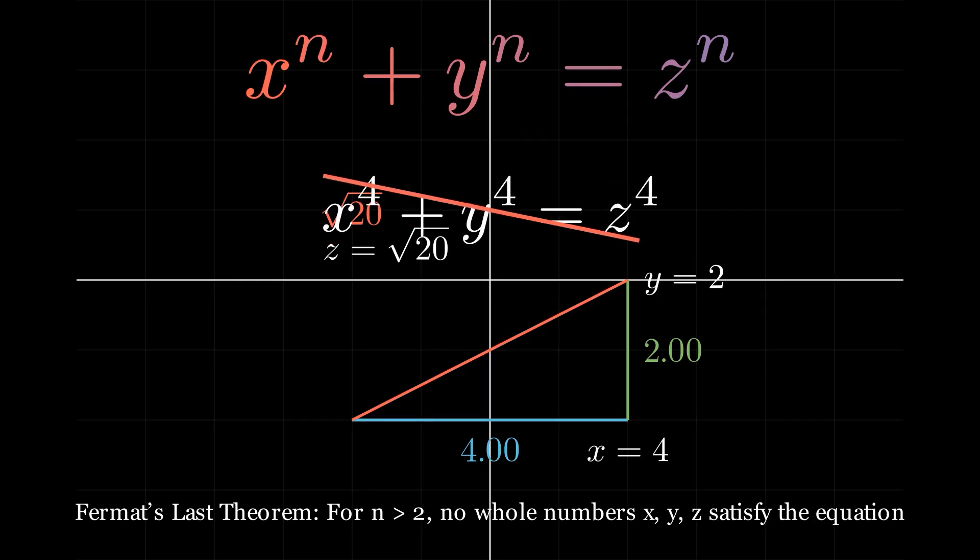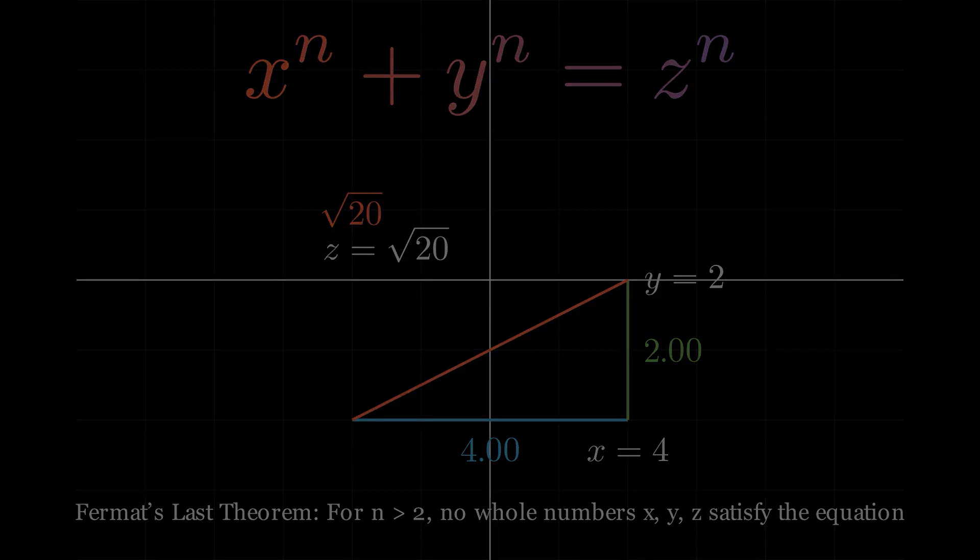Fermat's last theorem claims it doesn't. For n greater than 2, there are no whole numbers x, y, and z that satisfy the equation.